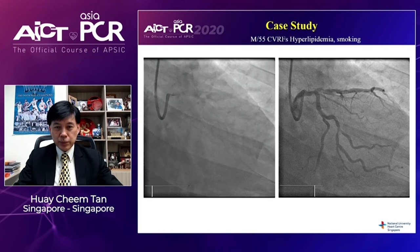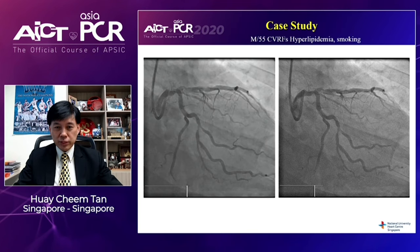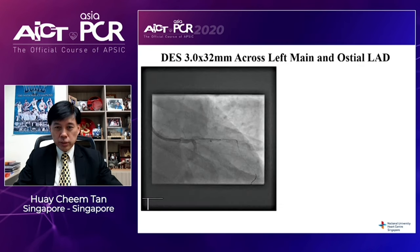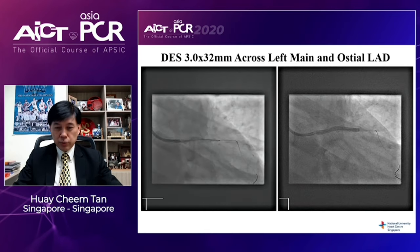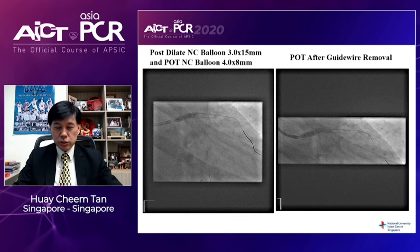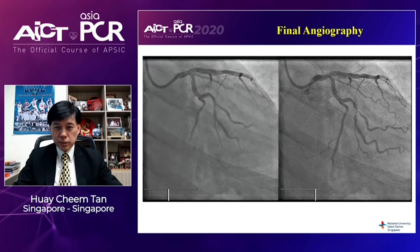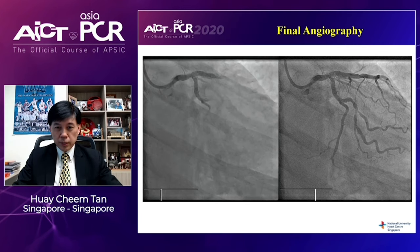Here is a patient with a distal left main and ostio-LAD stenosis with impaired blood flow. We simply put a wire, pre-dilate, and place a stent across the left main and ostio-LAD stenosis. After the stent is deployed, we perform a post-deployment high-pressure dilatation and a proximal optimization technique in the left main vessel. If the results are good, that is the end of the procedure — this is the provisional stenting strategy.